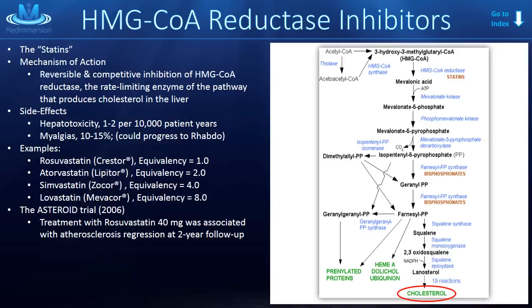Major side effects for the statins include hepatotoxicity. However, while this can be severe, only about 1–2 people per 10,000 patient years have this problem. What's far more common is myositis or myalgias — patients commonly complain of muscle aches on this medication. In severe cases, they could have rhabdomyolysis. Examples of statins include rosuvastatin, atorvastatin, simvastatin, and lovastatin.